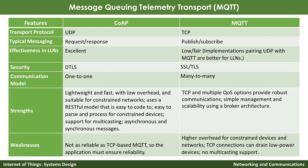From a security standpoint, CoAP has DTLS and MQTT has SSL and TLS. For communication mode, CoAP is one-to-one client-server, while MQTT is many-to-many. The strengths of CoAP include being lightweight, fast, low overhead, suitable for constrained networks, uses RESTful mode that is easy to code, easy to parse data because it is simple, supports multicasting, and supports asynchronous and synchronous messaging.